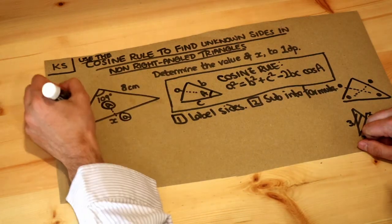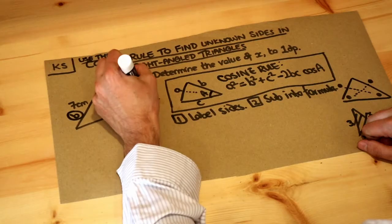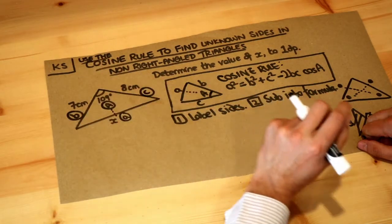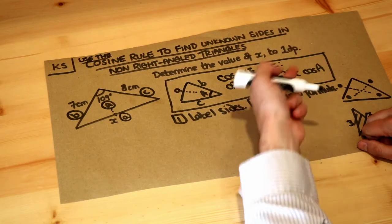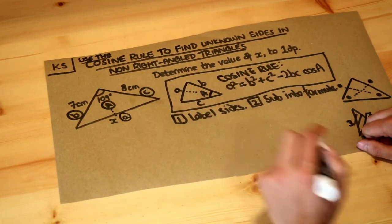And then b and c are going to be these other two sides involved. It doesn't matter which way around they go. We could put the b there and the c there, and it won't make any difference to your formula because look, b squared plus c squared is the same as c squared plus b squared.